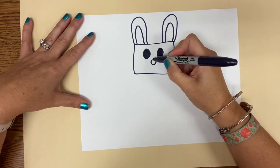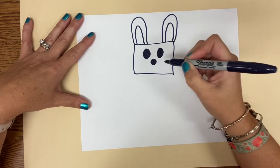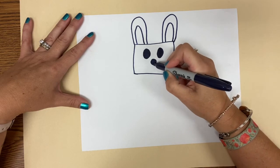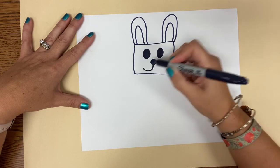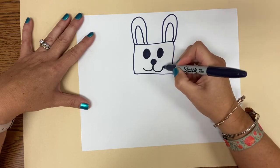His nose is a circle and then you're going to do a curved line and a curved line the other way.